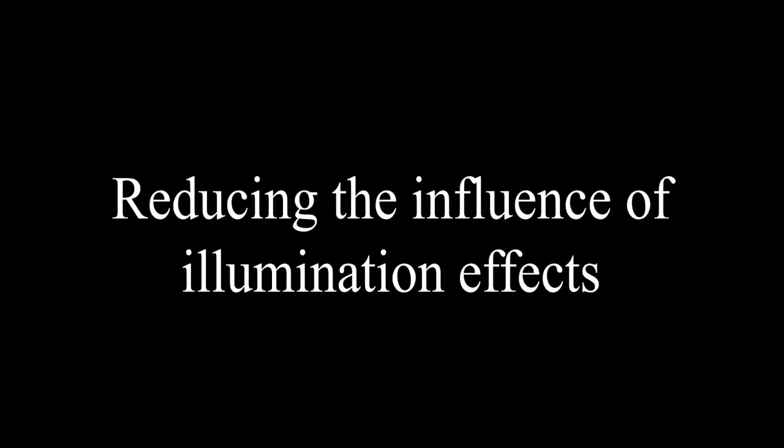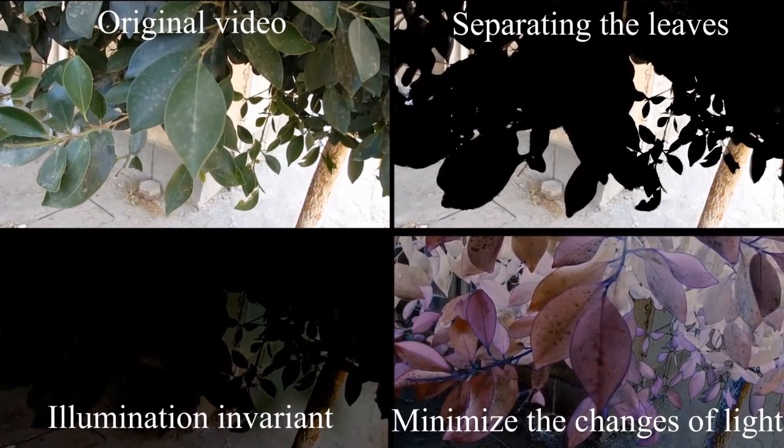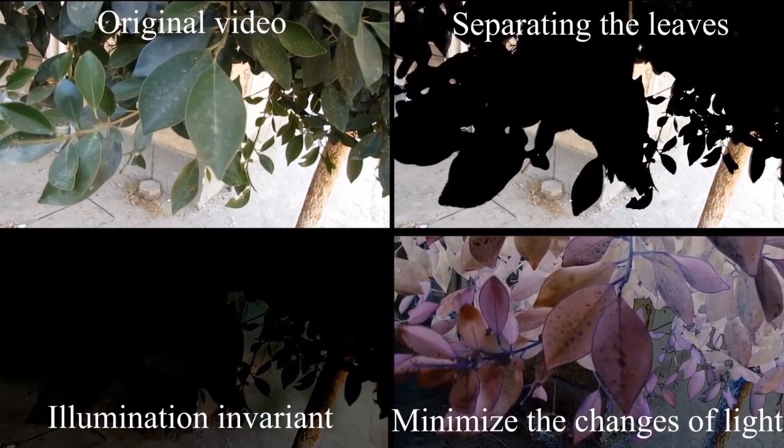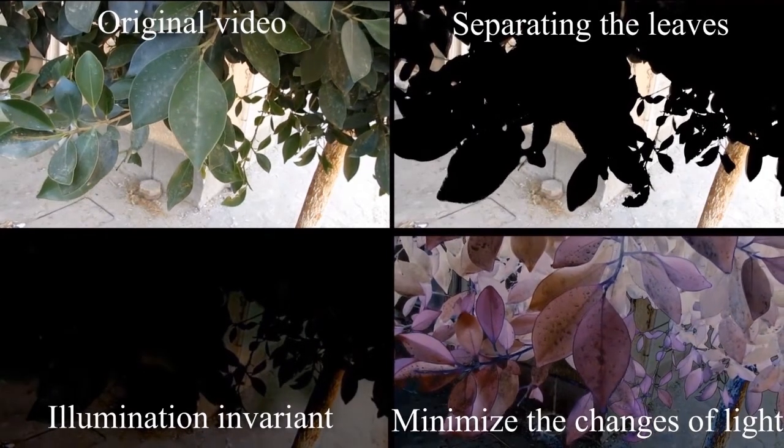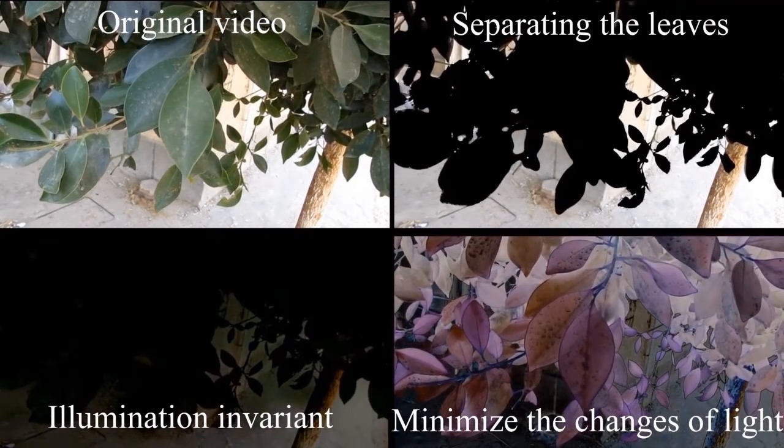To ensure that the changes are due to biological operations and not interfering factors like lighting, we have reduced the interference caused by other factors by separating the background using chroma keying. Then, we generate an illumination invariant version of the video.